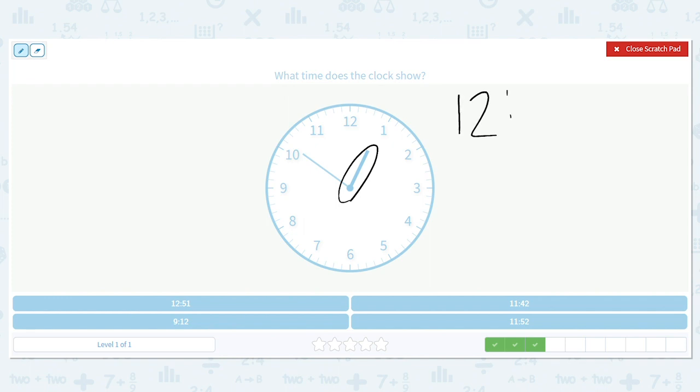Now look, I can get rid of anything that doesn't have 12 as an hour. 11, 11, 9. So that means 12:51 should be my answer. Let's double check to be sure.